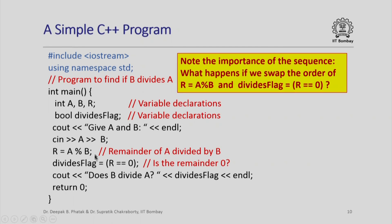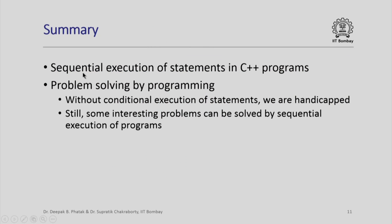An important thing to note here is the sequence in which these two instructions appeared: r = a % b, and then divides_flag = (r == 0). If we swapped the order — if divides_flag = (r == 0) appeared before r = a % b — then the value of r used when executing that statement would be the garbage value in the memory locations for r, which is not what we want. Therefore the sequencing of these instructions is very important. In summary, this lecture covered sequential execution of statements in C++ programs and an initial glimpse into solving problems by programming. Without conditional execution we are somewhat handicapped, and we will look at that in the next lecture. Thank you.